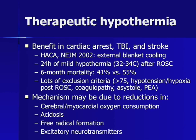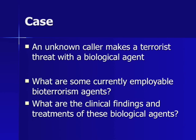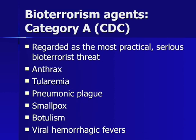Let us conclude with our final case. An unknown caller makes a terrorist threat with a biological agent. In 2000, the CDC issued a statement on the biological agents most likely to be used in a mass terrorism attack. These agents were deemed category A — the most dangerous — because they were the easiest to obtain, make into a weapon, disseminate, and cause morbidity and mortality among large groups in a short amount of time. The category A agents include anthrax, tularemia, pneumonic plague, smallpox, botulism, and the viral hemorrhagic fevers.